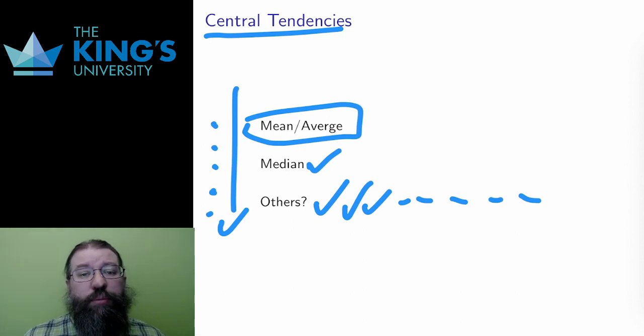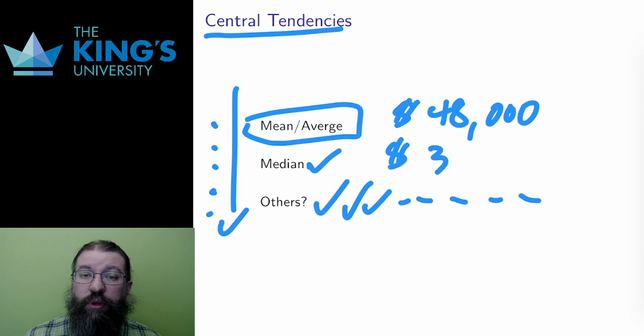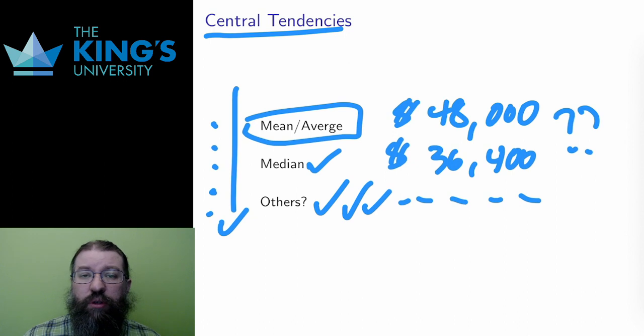A good example is distributions of wealth and income. Rough figures here are taken from the Stats Canada website in March 2021. The mean or average income in 2018 for Canadians 16 and over was $48,000. However, the median income was $36,400, and that's a pretty substantial difference. Which of these measures the typical Canadian?